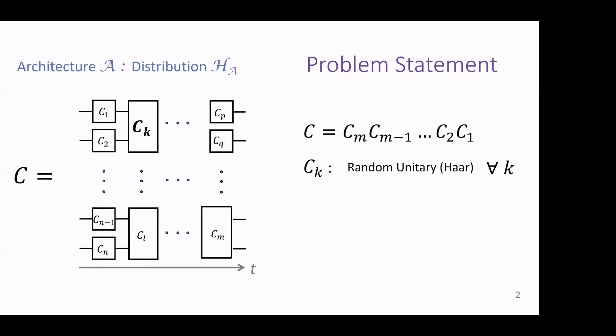Let me introduce a circuit first. In quantum computation, time runs on the horizontal axis. You have qubits one through N, and placeholders for gates — this is called a blueprint or architecture of a circuit without specifying what the gates are. Once you specify the actual gates — a bit flip, an X, a CNOT — this architecture gets instantiated by a circuit we can implement in the lab. If every local gate C_k is a random unitary drawn independently from the Haar measure, we say the circuit is as generic — as random as it gets — respecting that particular architecture.